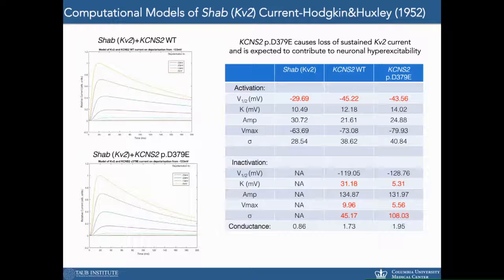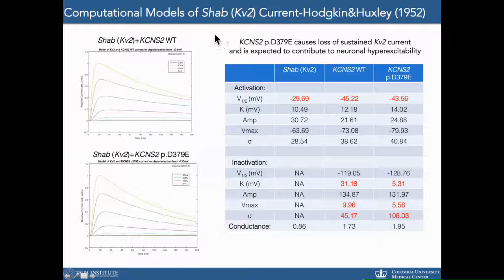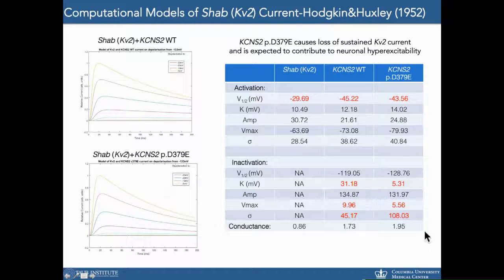Computational models of the SHAB current, incorporating either the human wild-type or mutant channel, were created using minimization functions to fit the experimental data to classical Hodgkin-Huxley current models from 1952. The table shows activation and inactivation parameters, with significant differences in the rate and severity of inactivation both for overexpression of the wild-type channel, but particularly for the mutant. We think that this mutant channel is causing loss of sustained KV2 current and contributing to hyperexcitability in these flies.